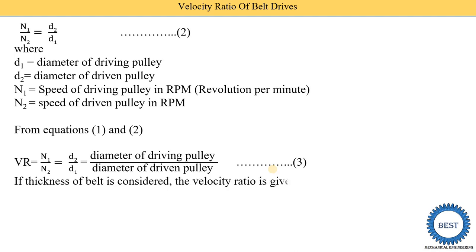If the thickness of the belt is considered, the velocity ratio is given by a new equation. With the pulley diameters D1 and D2, we add the belt thickness t, where t is the thickness of the belt. This completes the velocity ratio equations for simple belt drives.